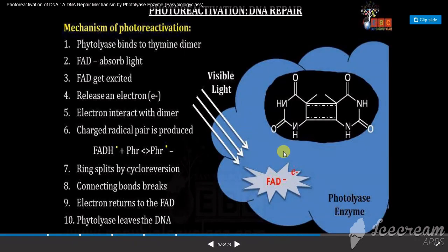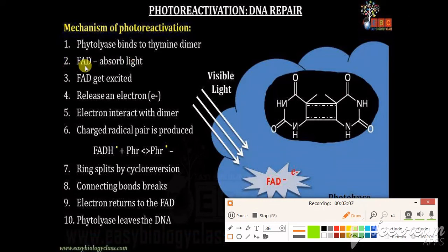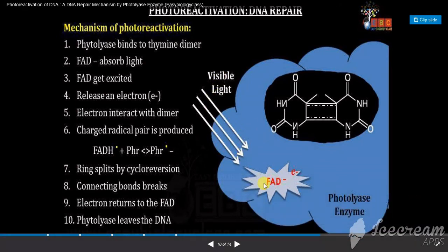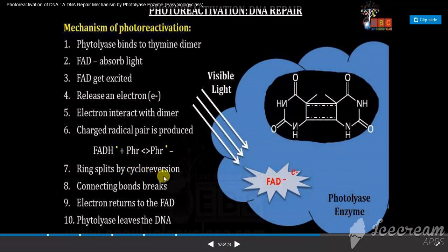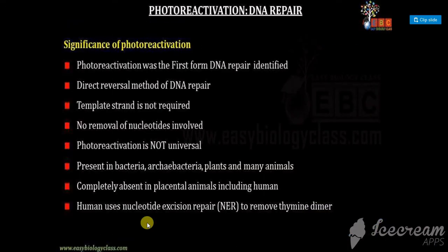The step-by-step mechanism: photolyase binds to the thymine-thymine dimer. Then FADH absorbs visible light and gets excited, releasing electrons. These electrons interact with the dimer, producing a charged radical pair — FADH radical and dimer radical. The ring then splits by cyclo-reversion, the connecting bond breaks, the electron returns to FADH, and finally the photolyase enzyme leaves the DNA molecule.